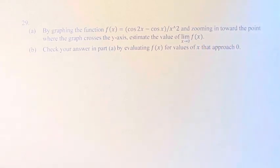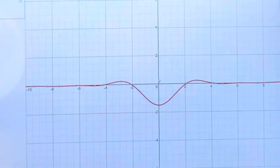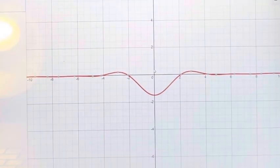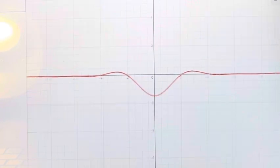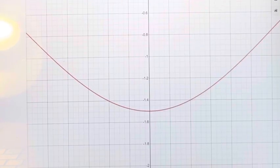So I have the function graphed right here, and we can see that there's a pretty clear limit as x approaches zero. It's going to be down at this point right here. So all we have to do is zoom in and find the value of this point.